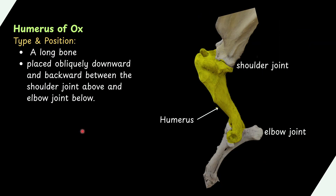In this video, we will discuss the humerus of ox. We will also discuss species differences in horse, dog, pig, and fowl.